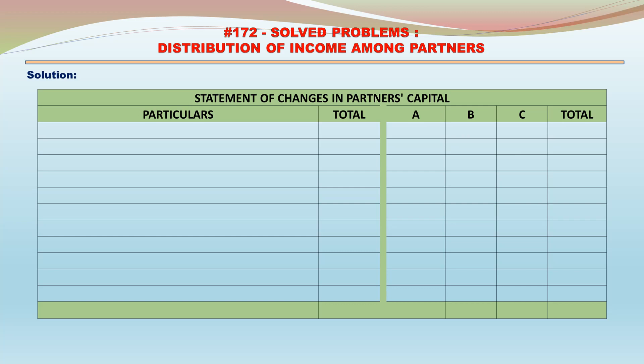Solution: Statement of Changes in Partners Capital. Particulars — Total, A, B, C, Total. Income: 250,000.